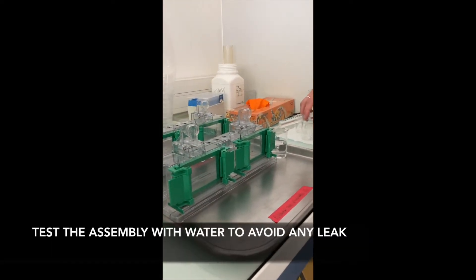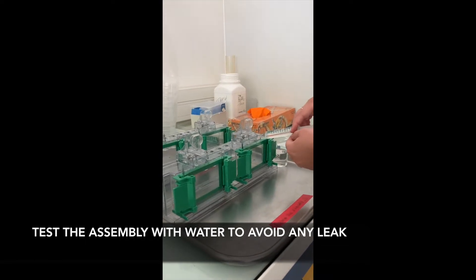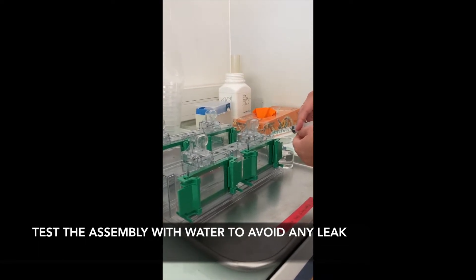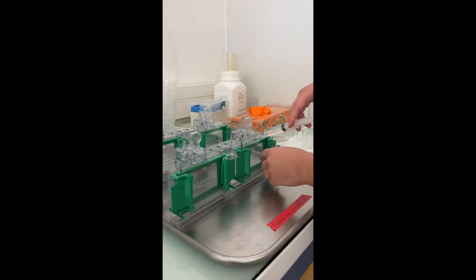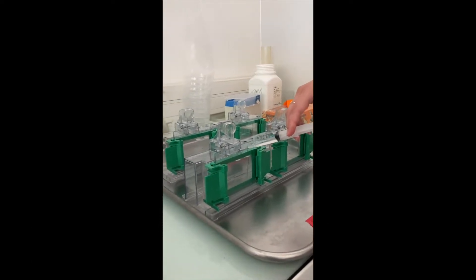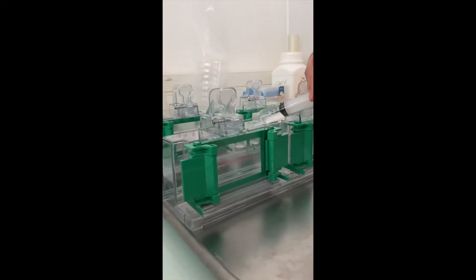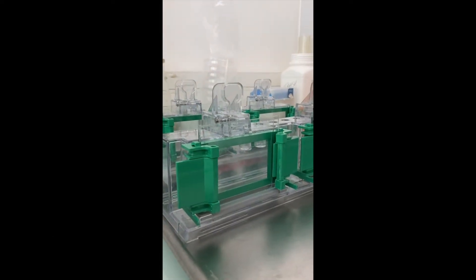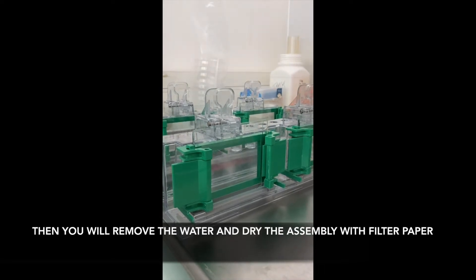At this step it's really important to test the assembly with water to avoid any leak. Repeat it for the four assemblies. In the case of leaks, do the assembly again. If everything is okay then simply remove the water and dry drips with filter paper.